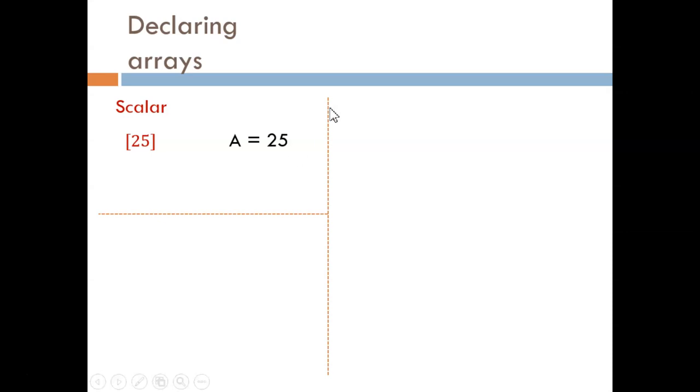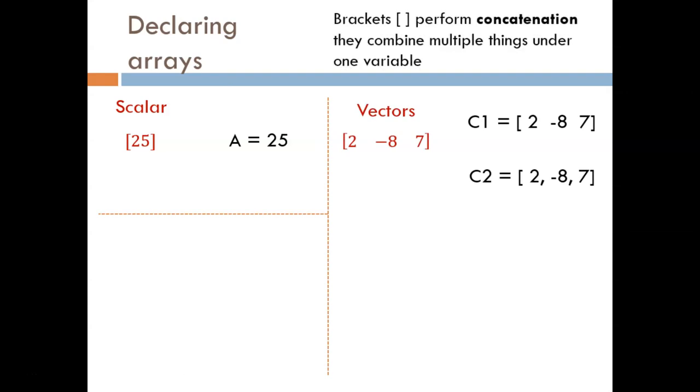For vectors or matrices though, we need to take advantage of concatenation. This is a fancy word that just means slap together or combine multiple things. Brackets are used to perform concatenation.